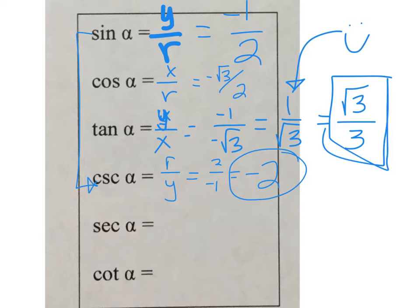The secant is the reciprocal of the cosine, so that's r over x, which is 2 over negative root 3, which if we rationalize becomes negative 2 root 3 over 3.